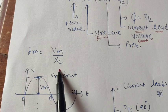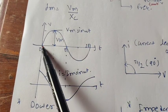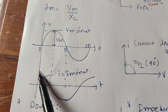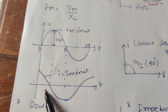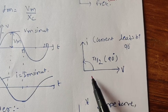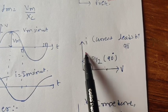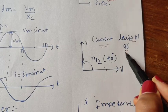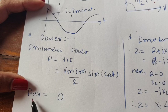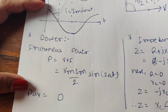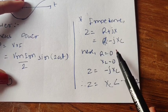The voltage waveform is Vm sin(ωt) with zero phase angle. The current waveform leads the voltage with a phase angle of +90°. In the phasor diagram, the angle between current and voltage is 90°, with current leading voltage. The instantaneous power is P = VI. The average power for a purely capacitive circuit is zero, same as a purely inductive circuit.